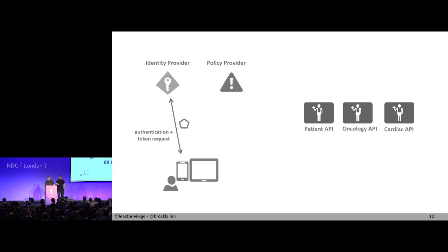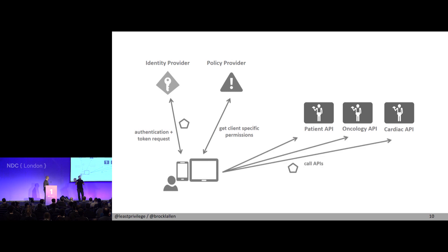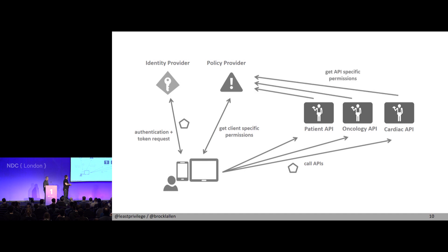The user first goes to the identity provider, does an authentication request, gets back the tokens, and then the application can go to the policy provider, send that identity, and get back the permissions for the UI. A UI has different authorization requirements than an API — in the UI it's about enabling or disabling buttons. When you then call the APIs with this token, the back-end services in turn go to the policy provider and get their API-specific permissions.